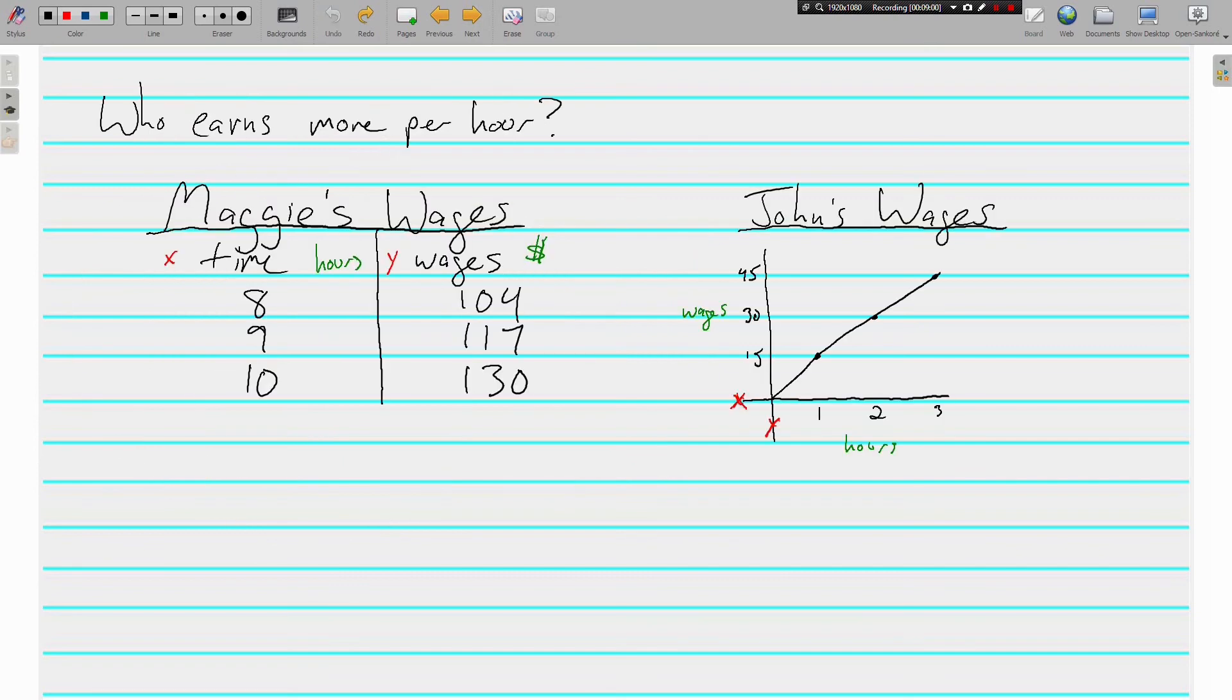Let's look at comparing a graph to a table. Here we're being asked, who earns more per hour? We've got some information about Maggie and we have some information about John and how much they make. Looks like for Maggie, the x value is time and hours. So for 8 hours, she earns $104. 9 hours, $117. 10 hours, $130. We are being asked, who earns more per hour? So we're going to need a unit rate. I think this is going to be the easiest one to figure out right here. 10 times what is $130? What do you do to x to get y? You multiply by 13. So, this equation is y equals 13x.